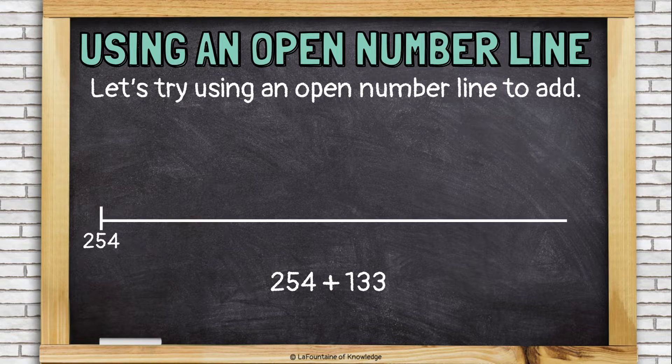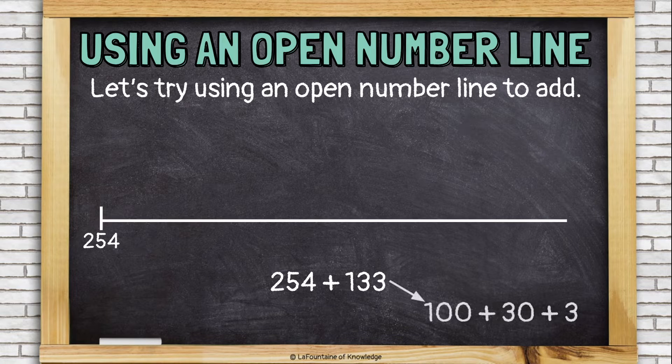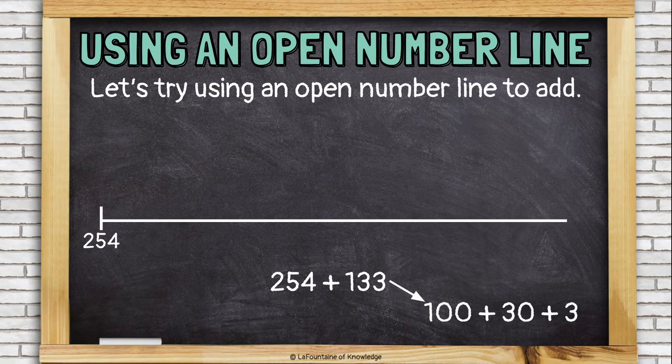Then we're going to break 133 down into smaller numbers that are easy to add in our heads. I call these friendly numbers. I'm going to use expanded form here and break it into 100 plus 30 plus 3.